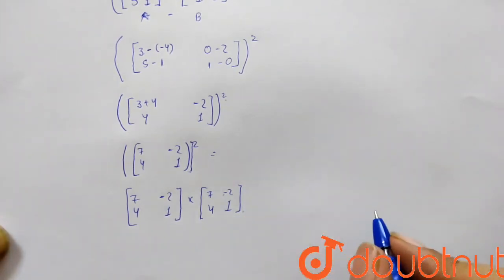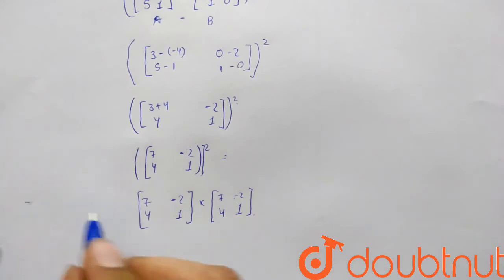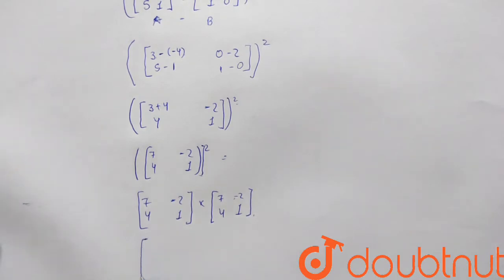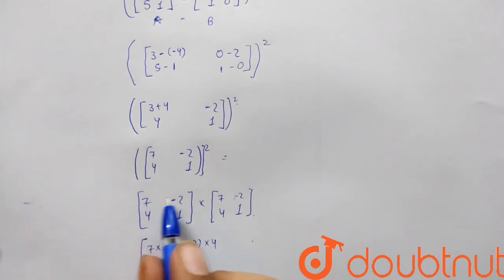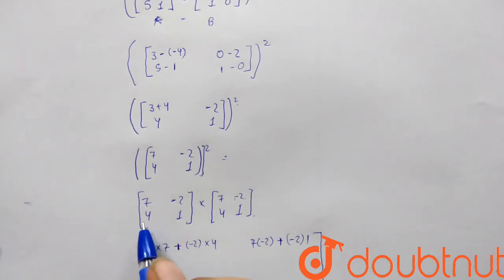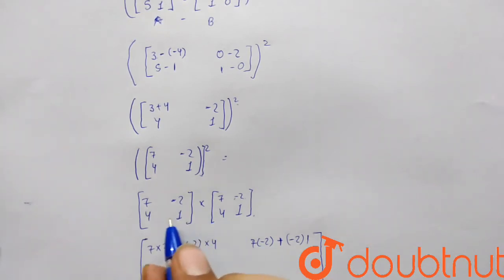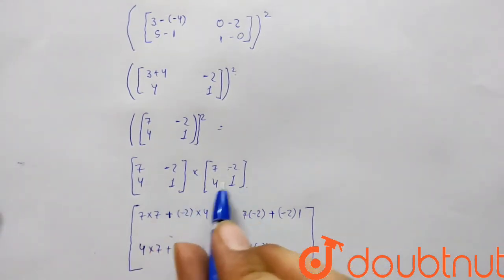We multiply the matrices using the standard multiplication method. The elements are: 7×7 + (-2)×4, then 7×(-2) + (-2)×1, then 4×7 + 1×4, and finally 4×(-2) + 1×1.